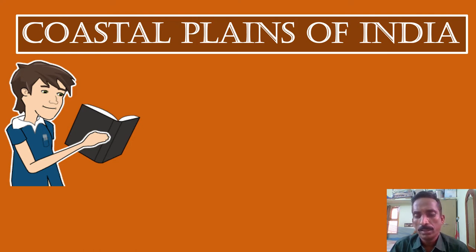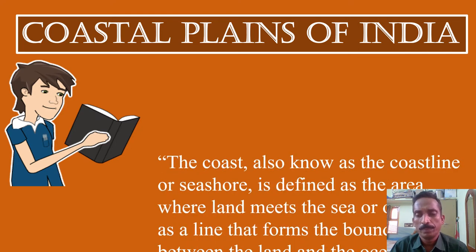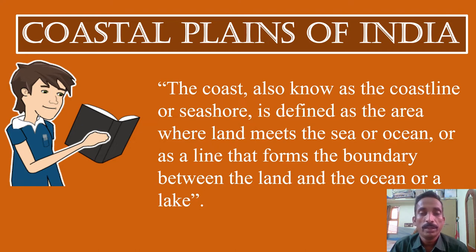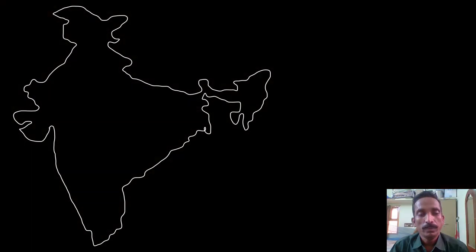First, the definition: what is a coast? The coast, also known as the coastline or seashore, is defined as the area where land meets the sea or ocean, or as a line that forms the boundary between the land and the ocean or a lake.